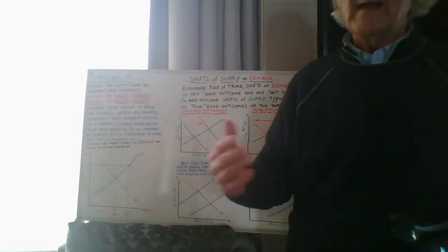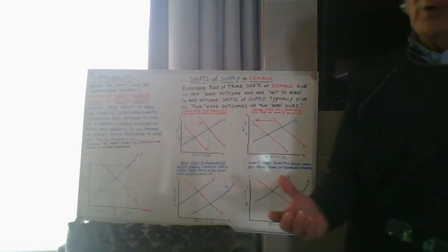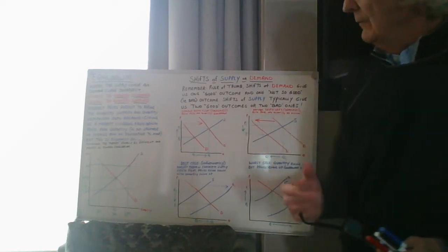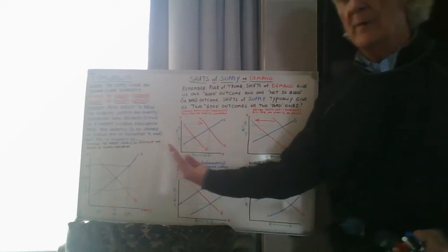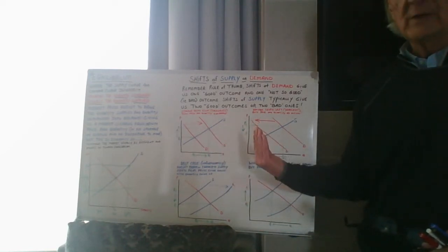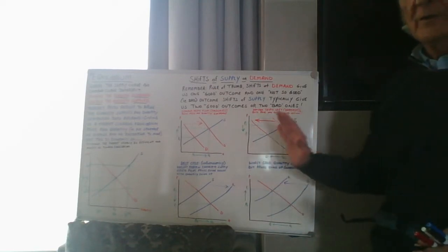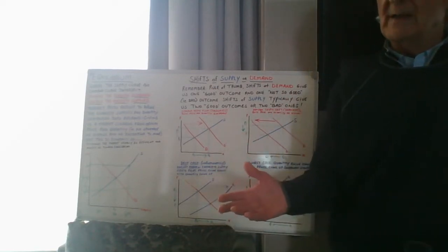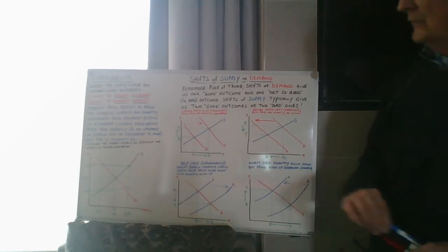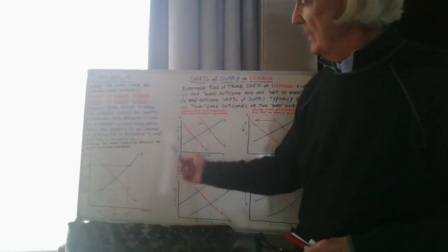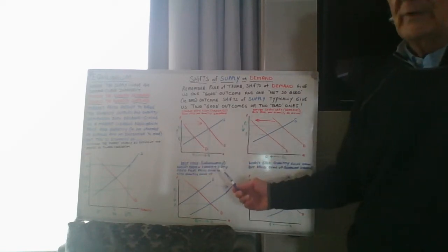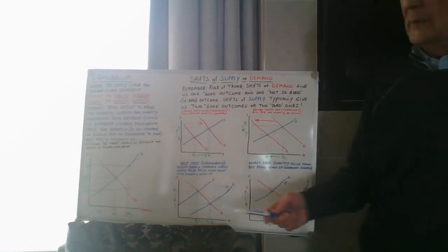We can also have shifts — that is when the entire curve, supply or demand, is moving at every single price level. As a rule of thumb, anything moving to the right, whether it's demand or supply, means more is being transacted. Anything moving to the left means less is being transacted. Price is easy — just going up and down. Quantity is moving right for an increase, or left for a decrease.